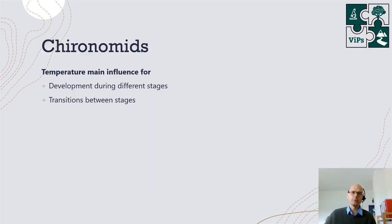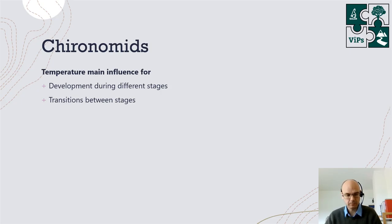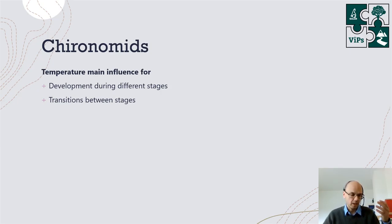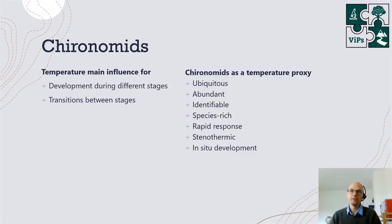Now that's where we get to the use of chironomids as a proxy. Let me quickly say a few words on why we specifically target temperature as a research aim. Temperature is a main influence on the development of chironomids during its individual life stages, specifically during the larval stage. Temperature is also a driving factor in transitions between different life stages — for instance, pupation, the transition from larva to pupa, is very strongly driven by factors like light intensity and temperature. As a result, the development of chironomids and the differences between individual species is very strongly related to temperature, so we can use them as an indicator for temperature.